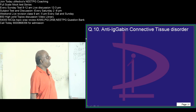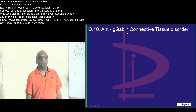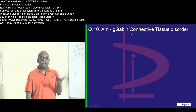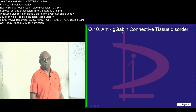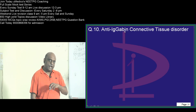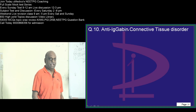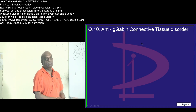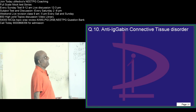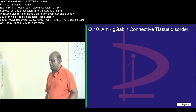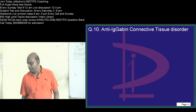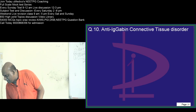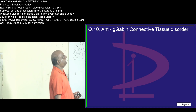Anti-IgG antibody, question number 10. In which connective tissue disorder do you find the anti-IgG antibody? IgM antibodies are produced against the IgG — anti-IgG antibody. Where do you find them? Very easy question. Very good — Praveen Kumar, Amir Farooq, everyone is right. It is rheumatoid arthritis.